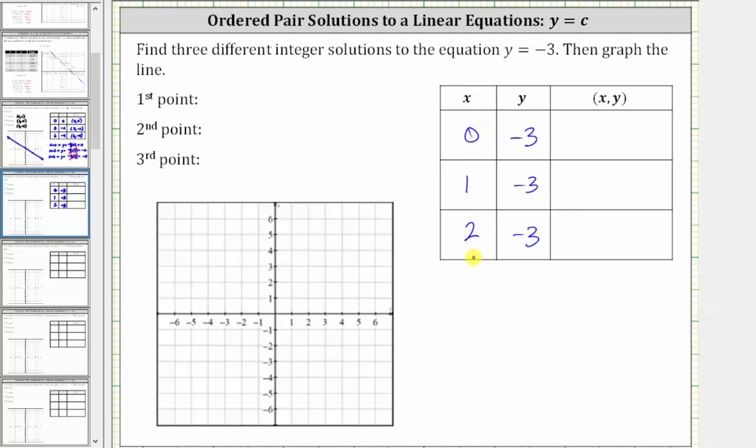Now we have three ordered pair solutions. One solution is zero comma negative three. A second solution is one comma negative three. A third solution is two comma negative three. Each of these ordered pair solutions represents a point on the graph of the line. Let's also record these ordered pairs as the points.